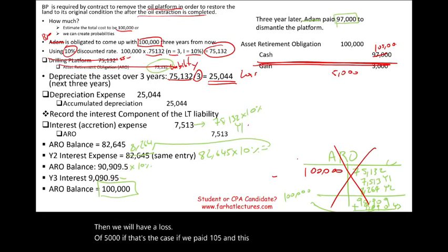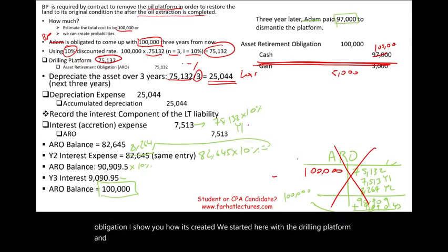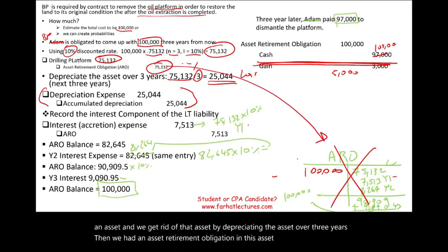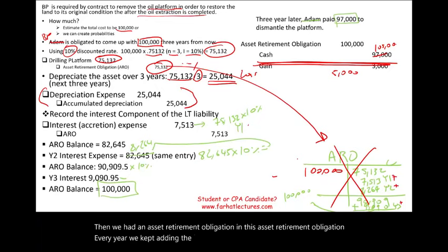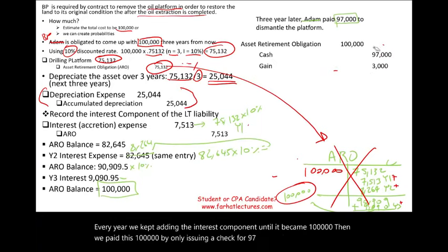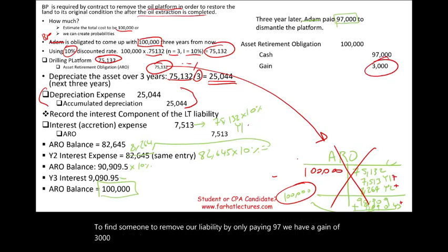That's the full arc of the asset retirement obligation. We started with a drilling platform as an asset and retired it through depreciation over three years. We had an ARO liability that grew each year through interest accretion until it reached $100,000. We then settled it for $97,000, recognizing a $3,000 gain. We created the ARO and then we got rid of it.